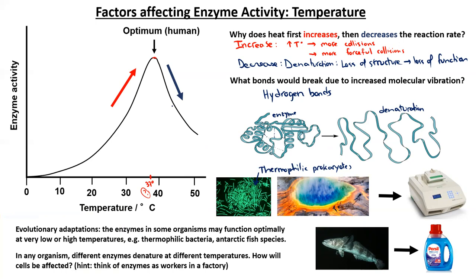It's also interesting to consider that in any organism, not all enzymes or proteins will denature at the same temperature. Some proteins are more or less resistant to denaturation. So the question is, how will that alter the cells, in particular with respect to chemical reactions taking place inside the cell? Think of the enzymes as little workers in a factory. If we increase temperature, some workers will stop — it's too hot — while others can keep going at different stations in the factory. How is that going to affect the chemical reactions overall and the coordination of those reactions?